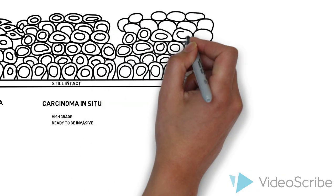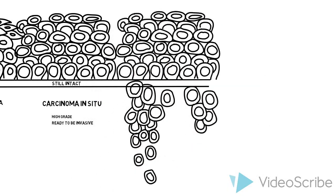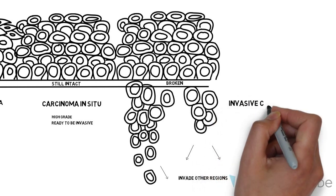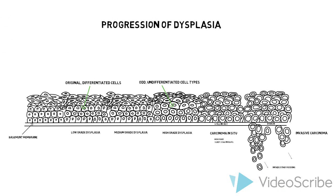Unfortunately, most carcinoma in situ do penetrate the basement membrane and then begin invading other regions. Once they break past the basement membrane, they are referred to as invasive carcinomas, or basically cancer.